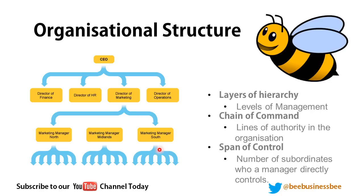The span of control is how many people a person directly controls — for example, a top manager may control six people, while the director of marketing controls just two. The chain of command shows how authority runs down the line. The layers of hierarchy count levels of management only — not lower-level workers — so this example has three levels of management.